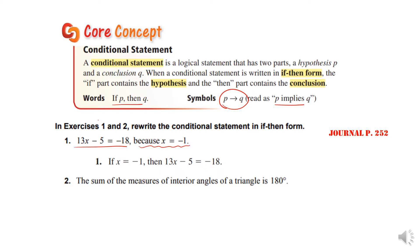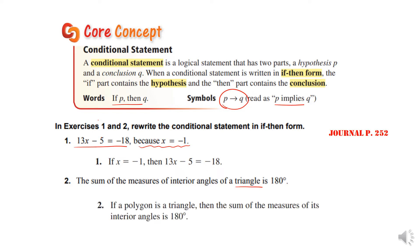When you're writing one about shapes, you want to remember that you have to decide what the shape is first. So you're going to say: if a polygon is a triangle, then the sum of the measures of its interior angles is 180. So be very careful when you're trying to do this.